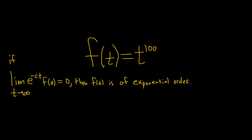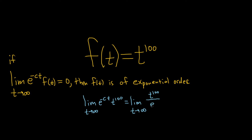So if this limit is equal to 0, then we can say this function is of exponential order. So all we have to do is take this limit. Let's see: limit as t approaches infinity of e to the negative ct times f of t, which is t to the 100. We can rewrite this as the limit as t approaches infinity of t to the 100 divided by e to the ct.